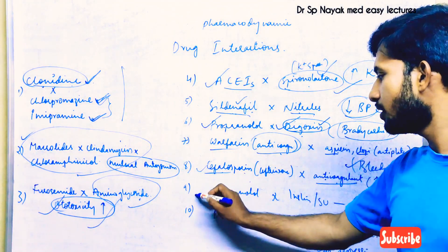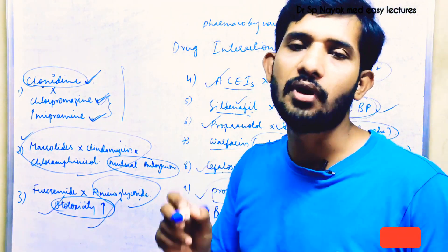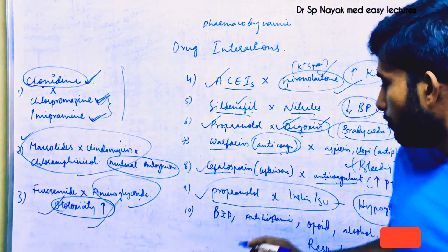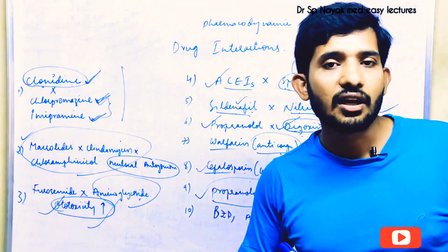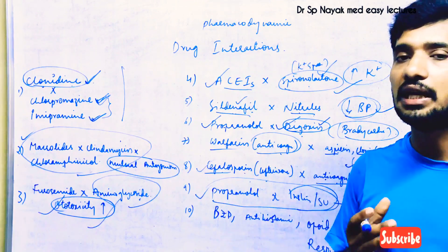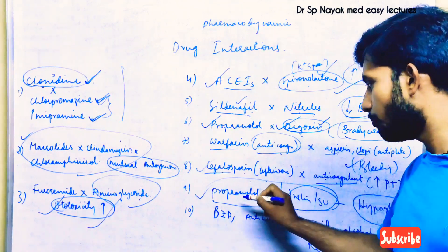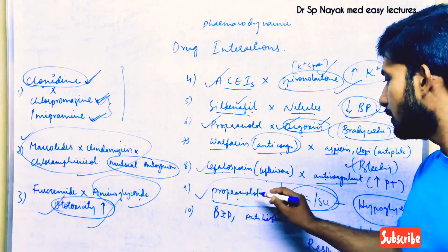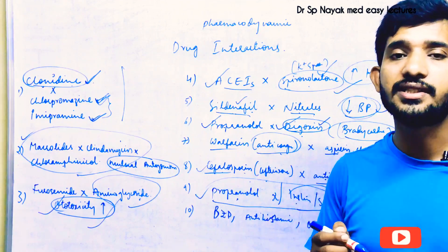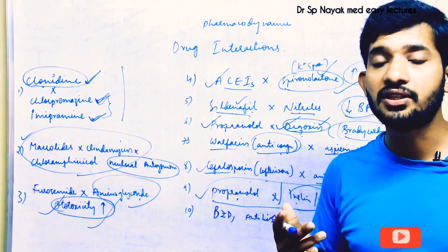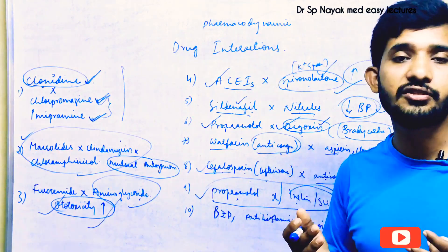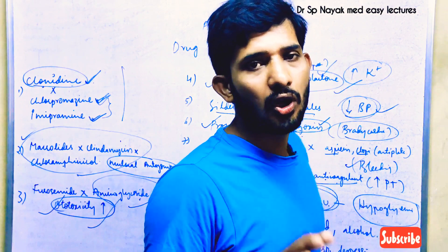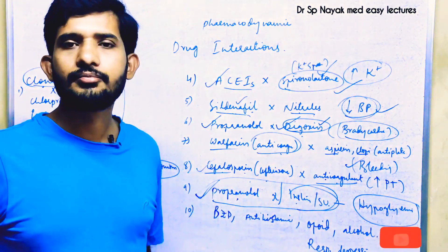The next very lethal drug interaction: never combine beta blockers with insulin and sulfonylureas. Insulin and sulfonylureas have hypoglycemic activity and cause hypoglycemia. When propranolol or any other beta blocker is given along with insulin or a sulfonylurea, the beta blocker masks the hypoglycemic symptoms, causing asymptomatic hypoglycemia, which leads to many lethal consequences. Never combine beta blockers with insulin and sulfonylureas.